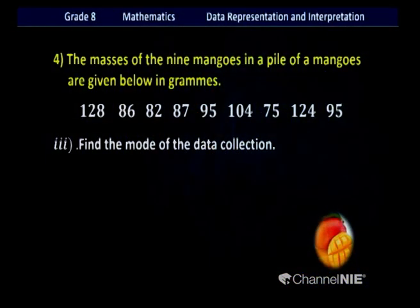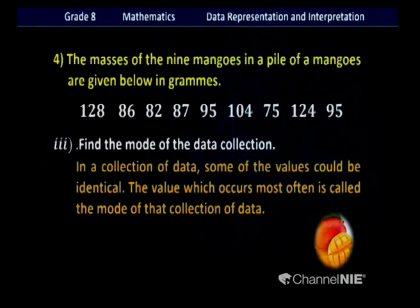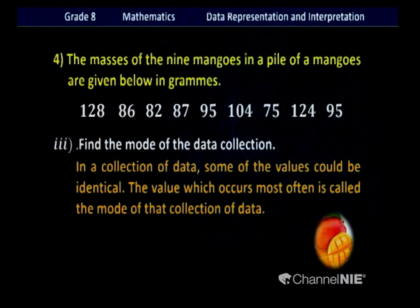Next question: find the mode of the data collection. What is the mode? In a collection of data, some values could be identical. The value which occurs most often is called the mode. In this collection, 95 appears two times — it is the value which occurs most often. Therefore the mode of this data collection is 95 grams.